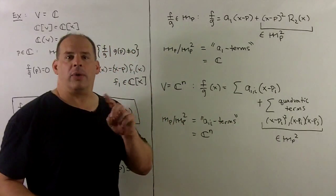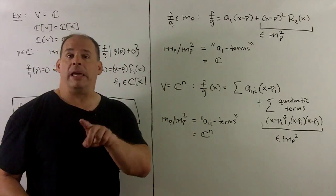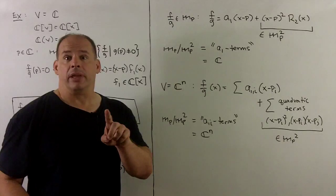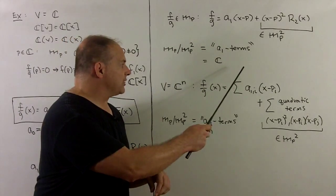When I take the quotient, the only thing we have to work with are the a₁ terms. That's going to be just C. So we're talking about linear functionals from C to C, and so we have a one-dimensional tangent space here.